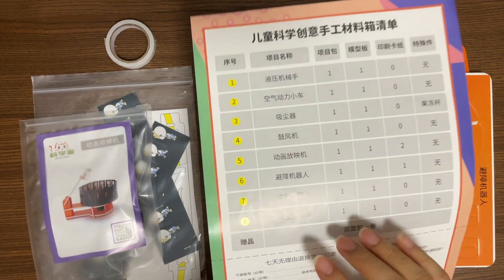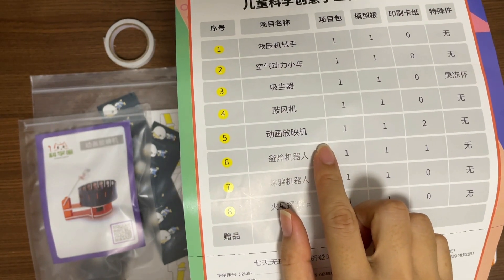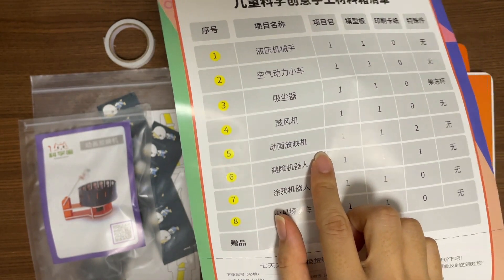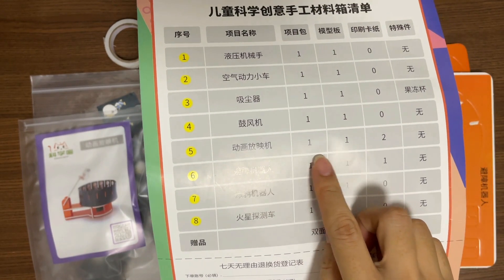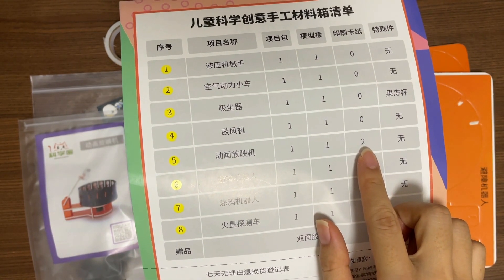Animation player is the fifth model in the box. Chinese name is Donghua Fangyingji. There is one package of material, one cardboard, and two pieces of printed paper.